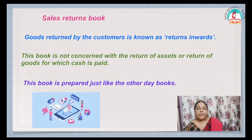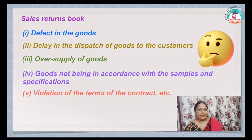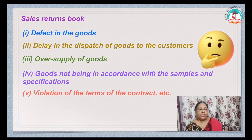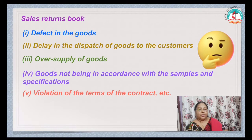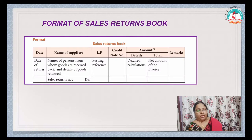Sales Returns Book. Goods returned by the customer is known as returns inwards. This book is not concerned with the return of assets or return of goods for which cash is paid. Sales Returns Book records what the debtors — the customers — have returned back. Reasons for return include: any defect in the goods, delay in dispatch of goods, oversupply of goods, goods not being in accordance with samples and specification, or violation of the terms of contract.